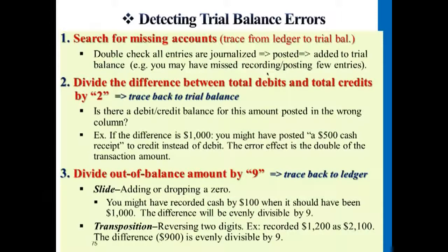Another type of error would be a slide error or a transposition error. That could be adding an additional zero or missing a zero. For example, if a transaction was supposed to be $1,000 for cash and service revenue, and when you posted it you actually missed a zero for cash.